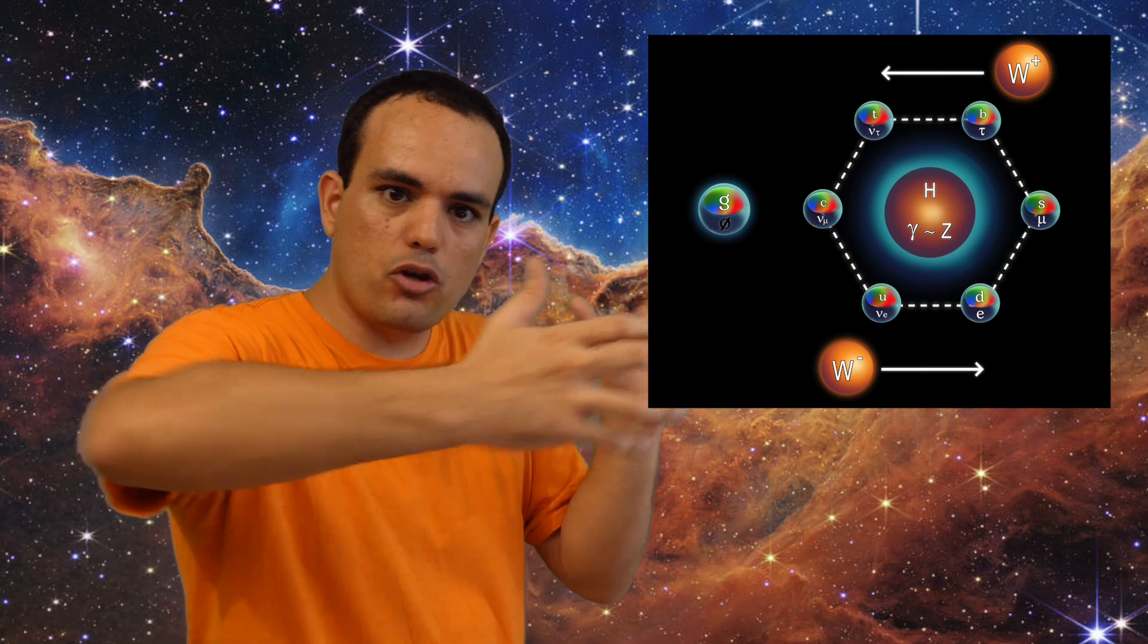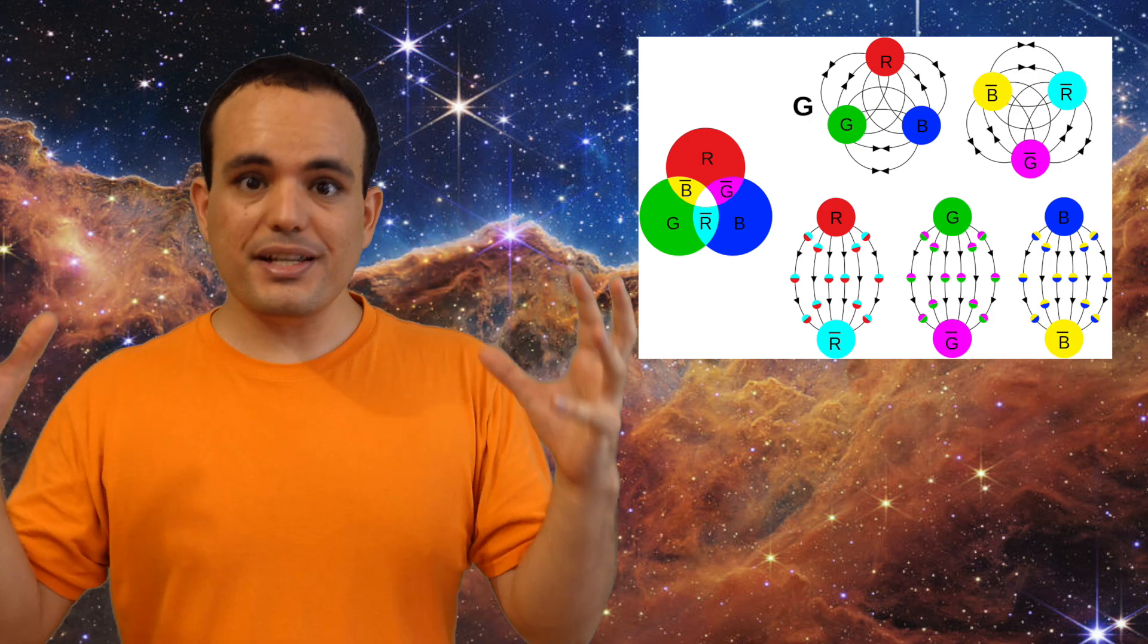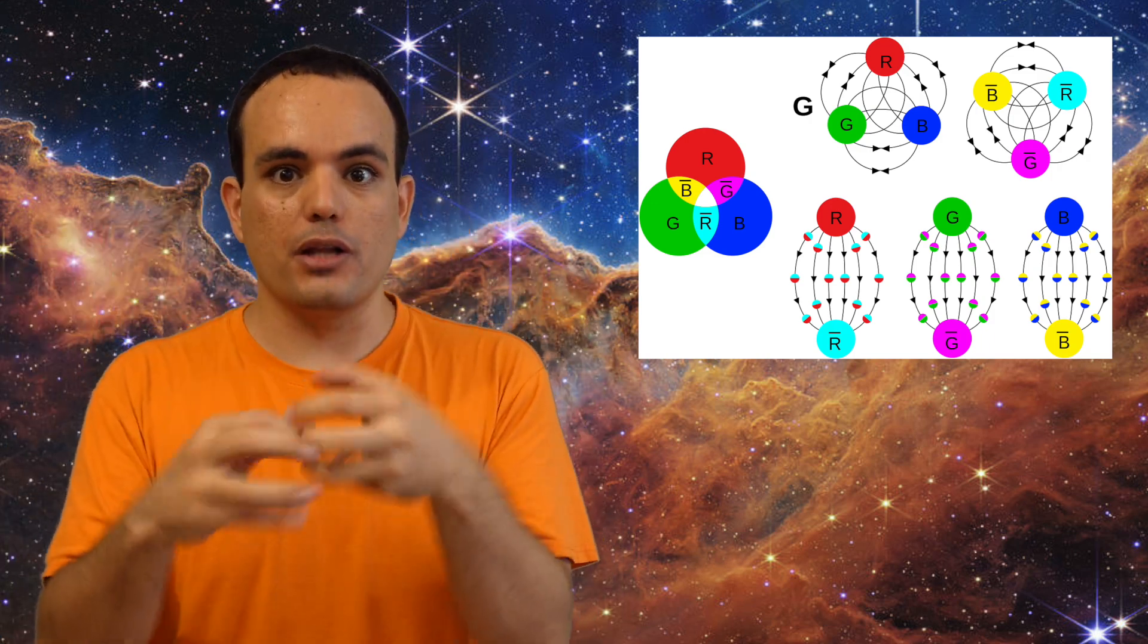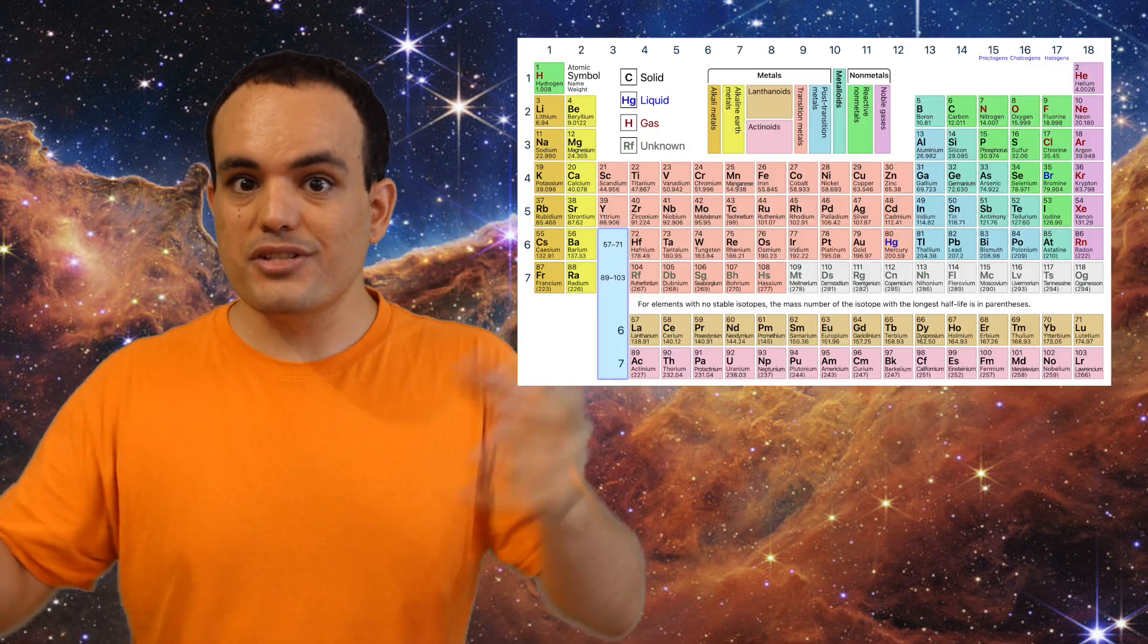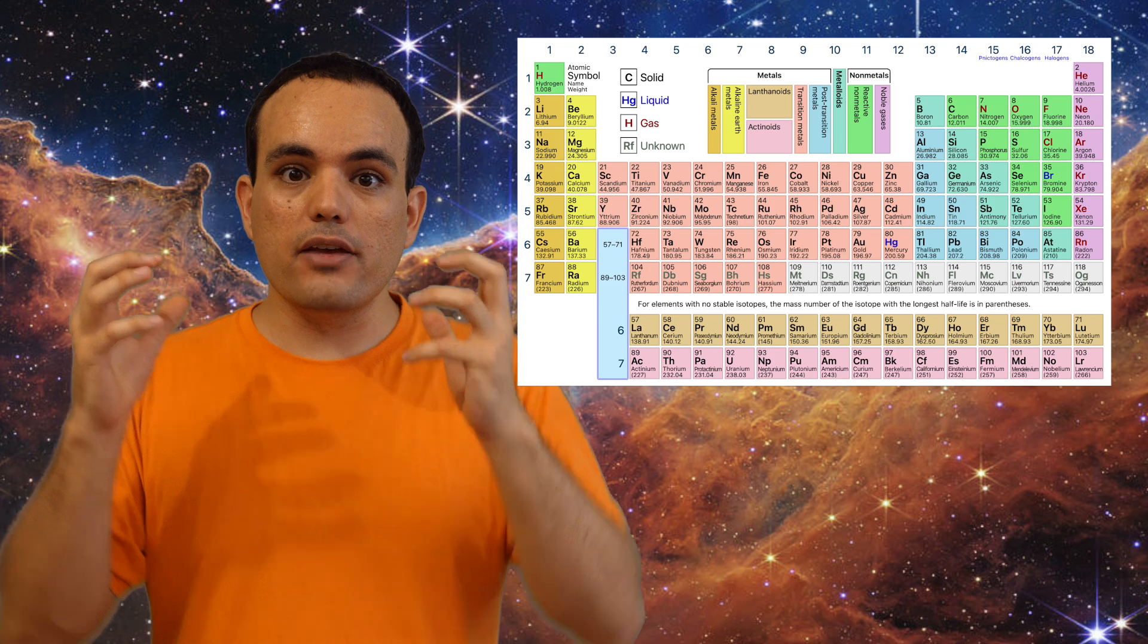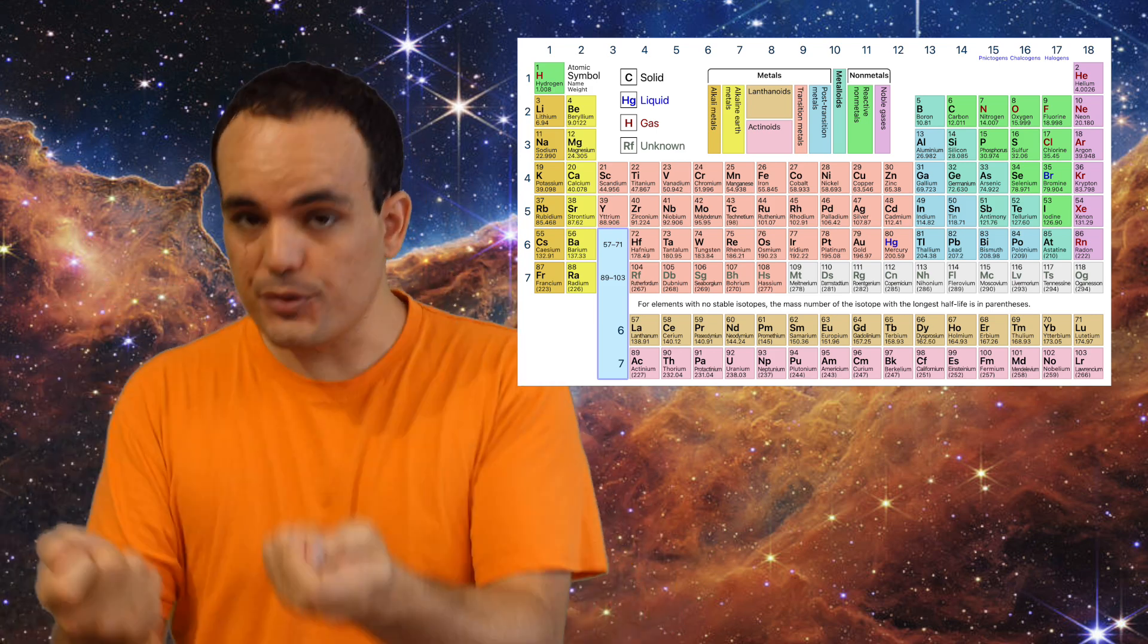Quarks interact with the strong force by exchanging bosons that carry color charge, known as gluons. And in fact, this diagram could have like a third dimension and that third dimension could be color charge, but let's not do that today. What's important is that quarks always attract each other until they form groups with neutral color charge. And this is very similar to how protons and electrons attract each other until they form atoms with neutral electric charge.